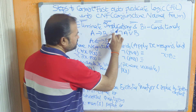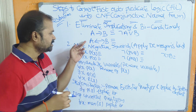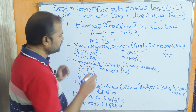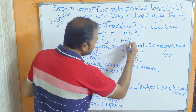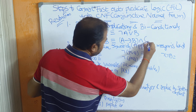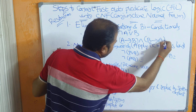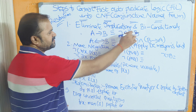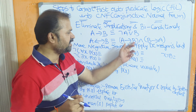Next, if the statement is in the form A biconditional B, then it is replaced by A conditional B and B conditional A. A conditional is nothing but implication, so A implies B means negation A or B, and B implies A means negation B or A.